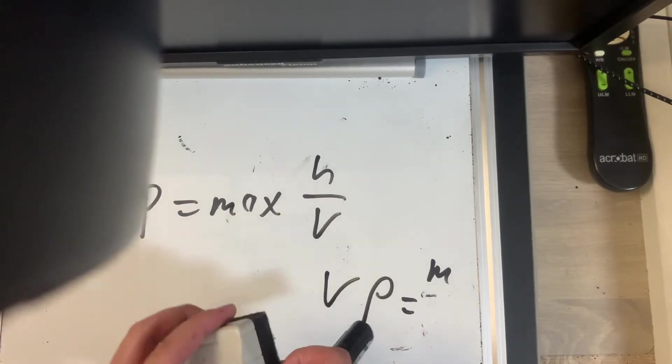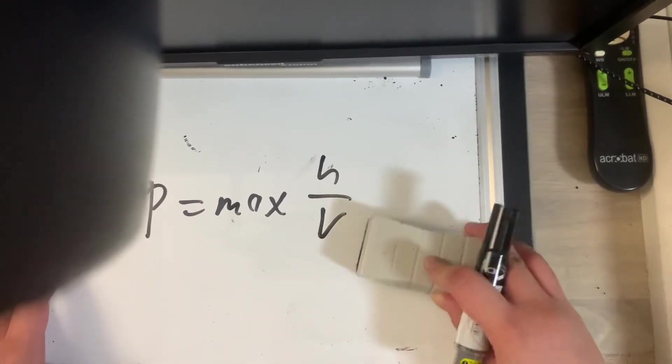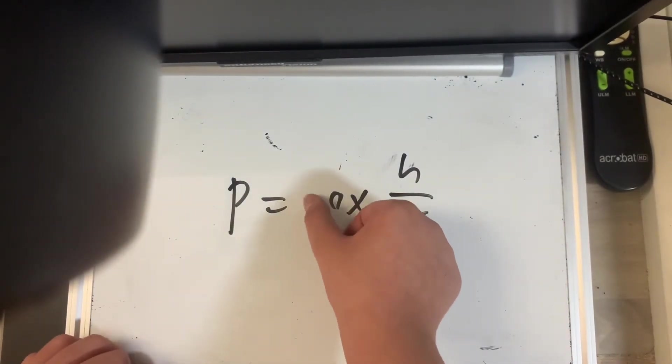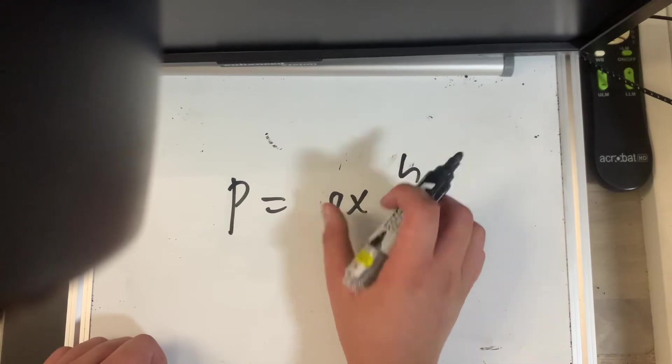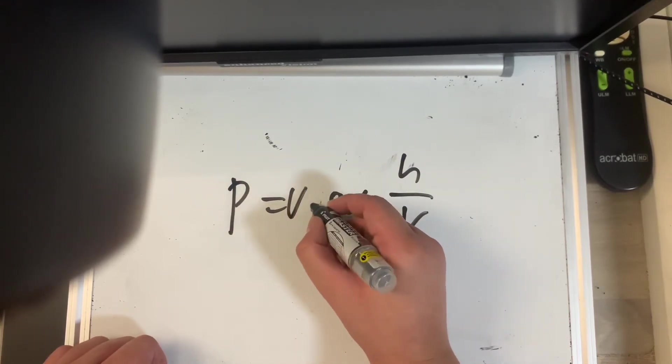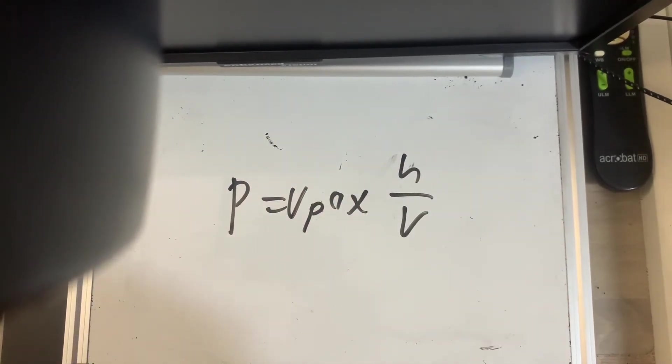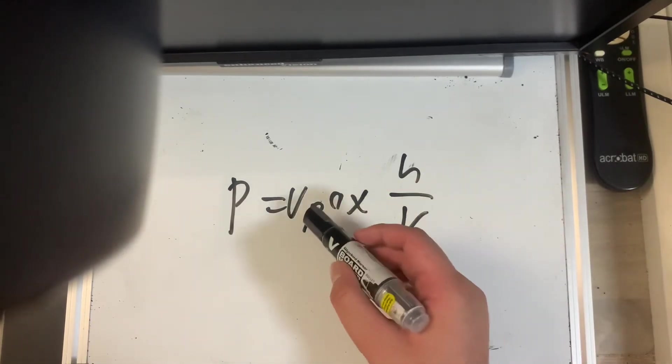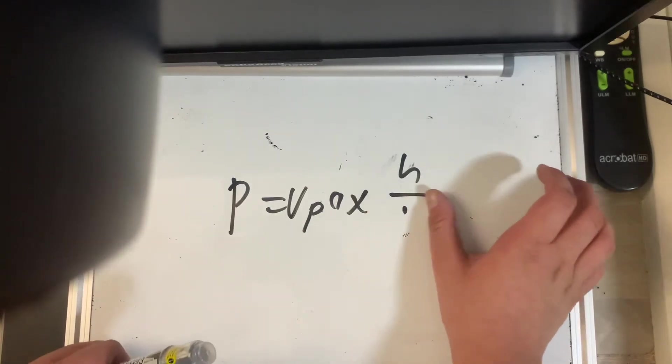Then, we're going to substitute this value into the equation. So we're going to replace M with V rho. Okay. V rho. Alright. Now, we can see that 1 over V is here. And we can also see that V is here. So they cancel each other out. Alright.